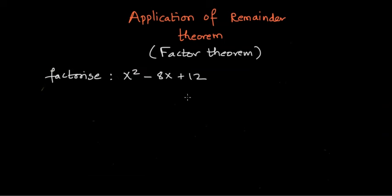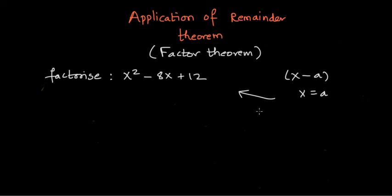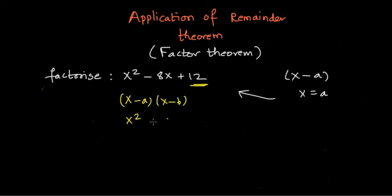Usually the question is posed as: factorize a given polynomial — for example, x² - 8x + 12. To use the factor theorem, we need to identify some (x - a) that is a factor. For a quadratic, we know it can be written as (x - a)(x - b), and the constant term equals a·b. So 12 = a·b, and this 12 could be written as 1×12, 2×6, or 3×4.